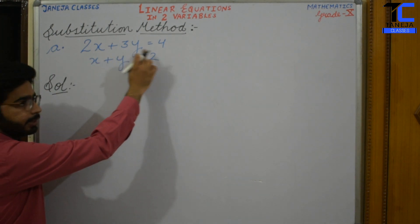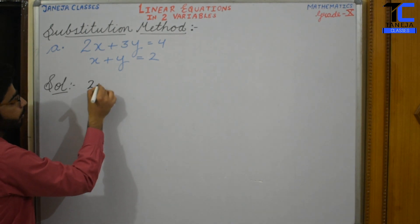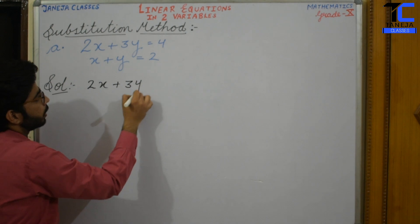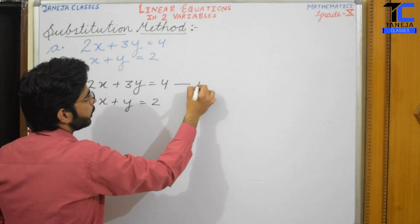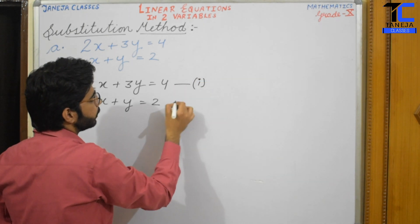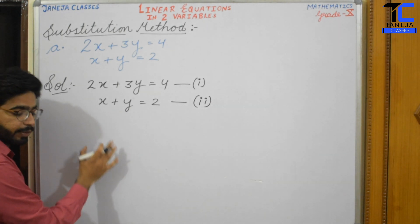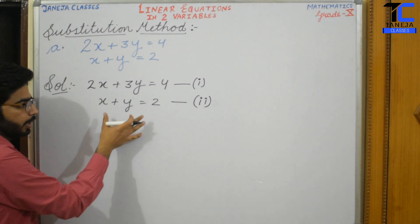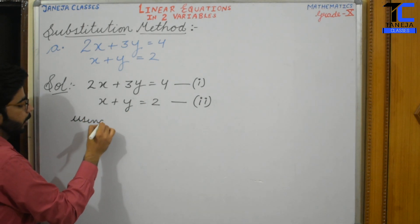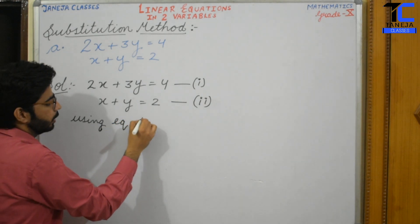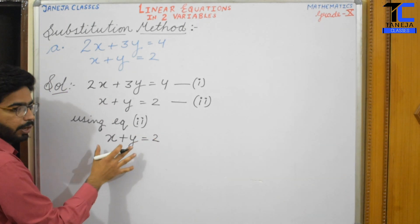We have this question: 2x plus 3y is equal to 4, and x plus y is equal to 2. Let us write these two equations. Let the first equation be equation 1 and the second equation be equation 2. We can use any of these two equations, so I am using equation 2 first.